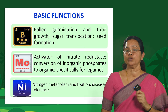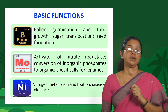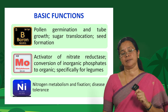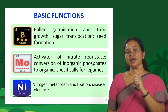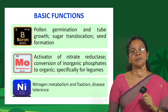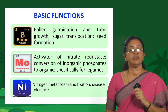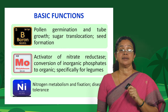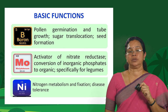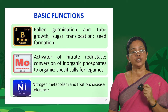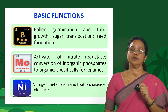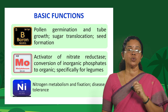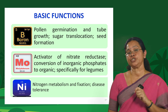Boron is an odd man out in this group because it is the only non-metal among the micronutrients. Boron is involved in germination of pollen grains and pollen tube growth, and similarly in sugar translocation and seed formation. So boron has a role in pollination and fertilization in crops.